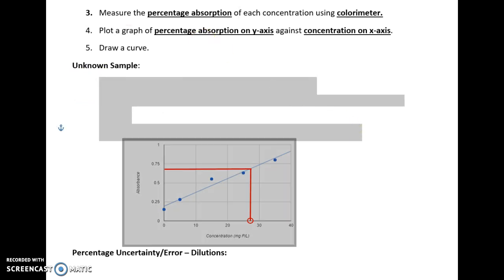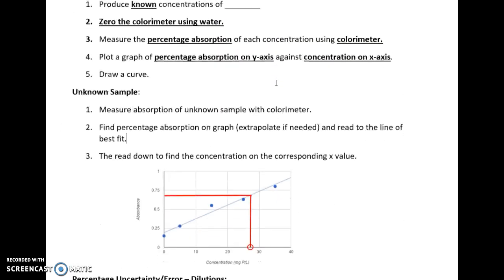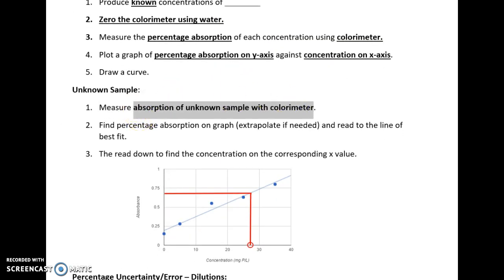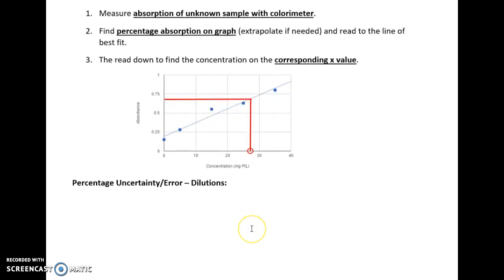So what can we do with the curve? Well, we need to work out the concentration in an unknown sample. We don't know whatever the concentration is in this test tube. So what we can do is we can measure the absorbance using a colorimeter. And then write down the reading of the absorbance. Let's say, for example, the absorbance was 0.665. So find percentage absorbance on graph. You might need to extrapolate it, and then read across to the line of best fit or the curve you've drawn, and then read down to find the concentration, which will be the corresponding x value.